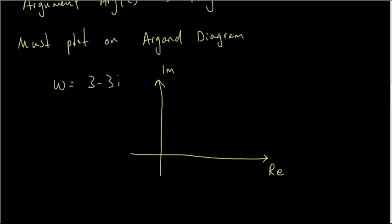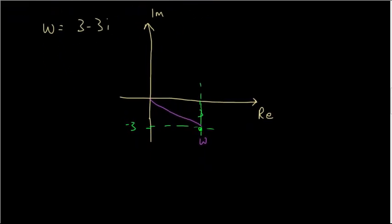The imaginary axis is where the i goes. So we have 3 on the real axis and negative 3 on the imaginary axis, and that gives us the point w on the plane. This is my rectangular form. Now, to express that using polar form, I need to find two things: this length r from the origin to w, and this angle theta.